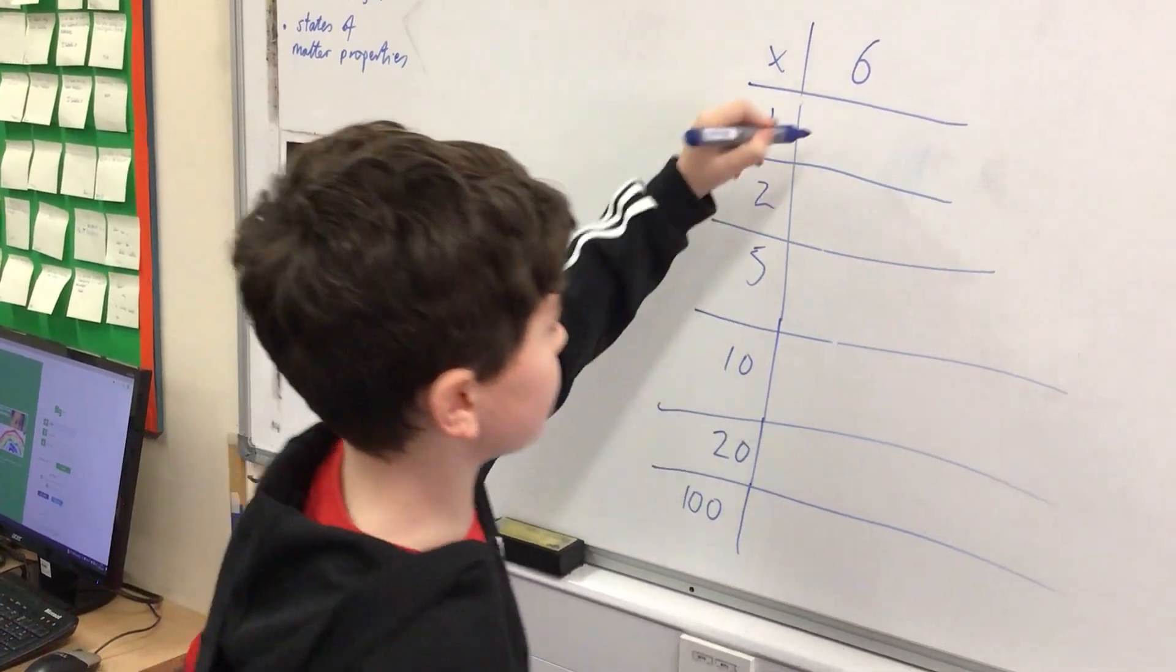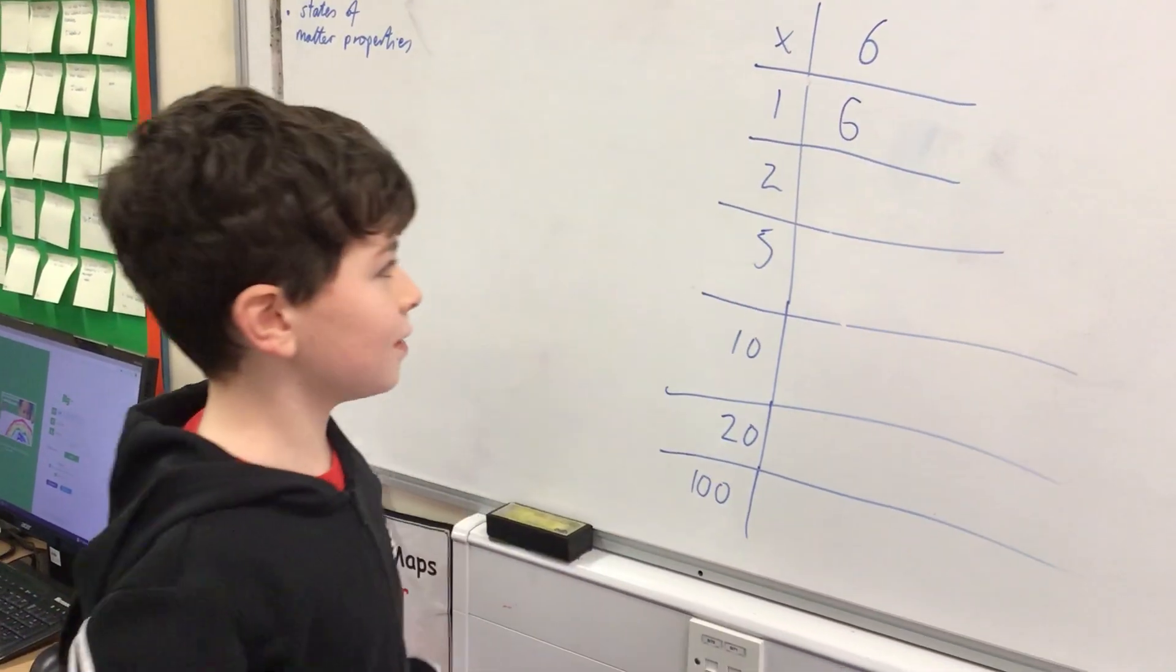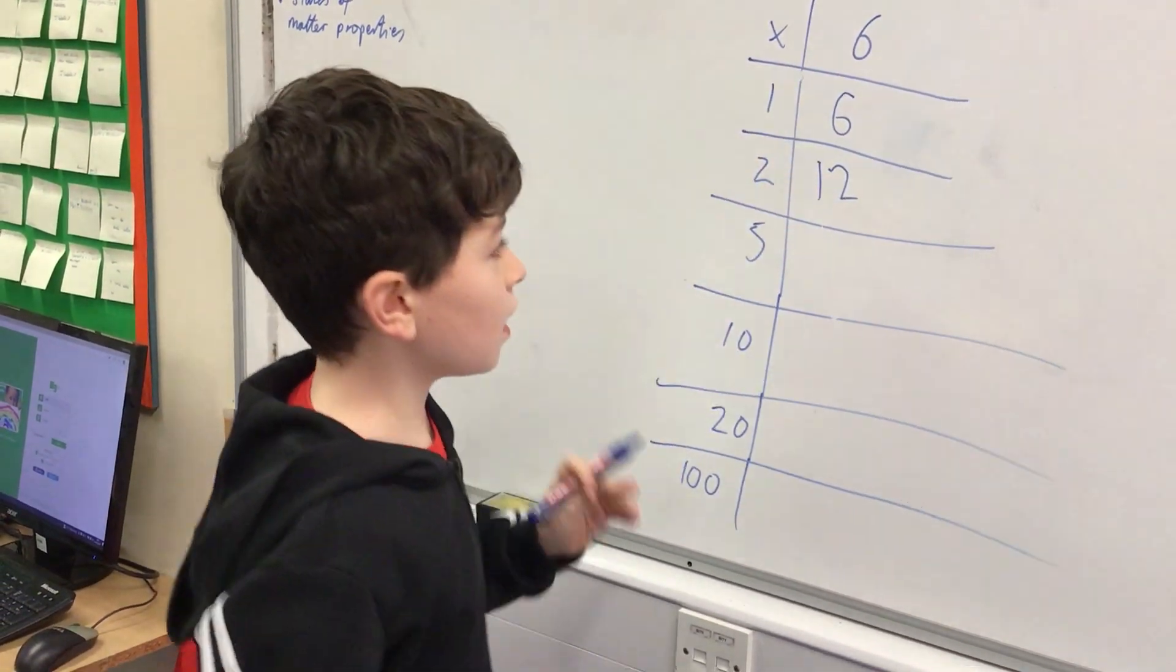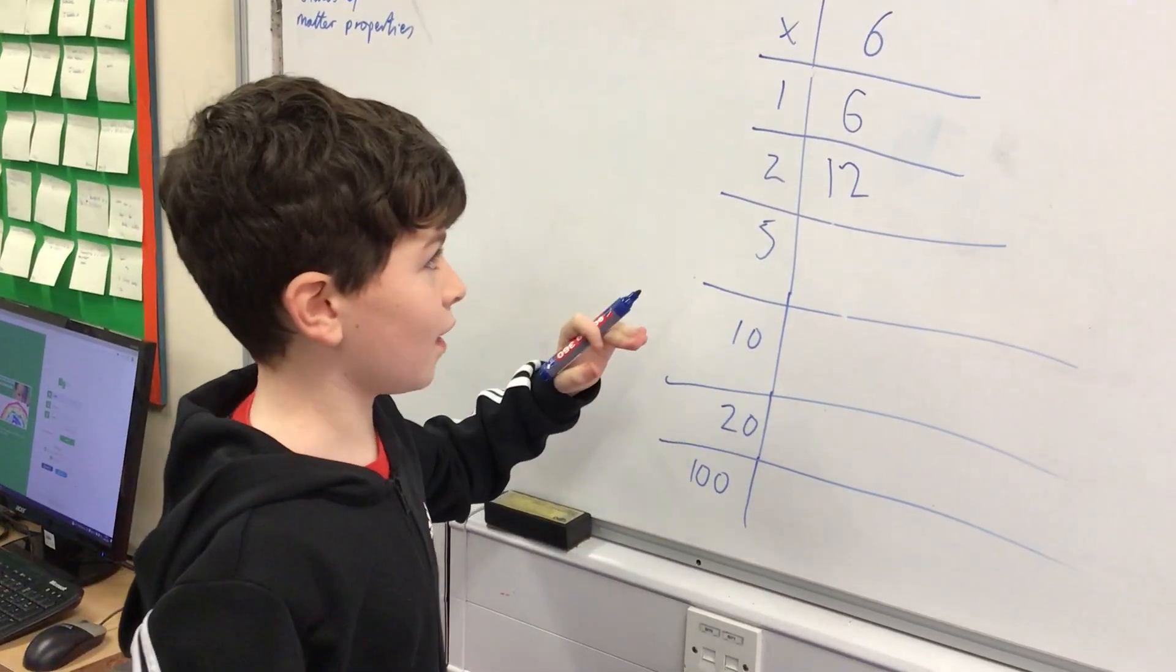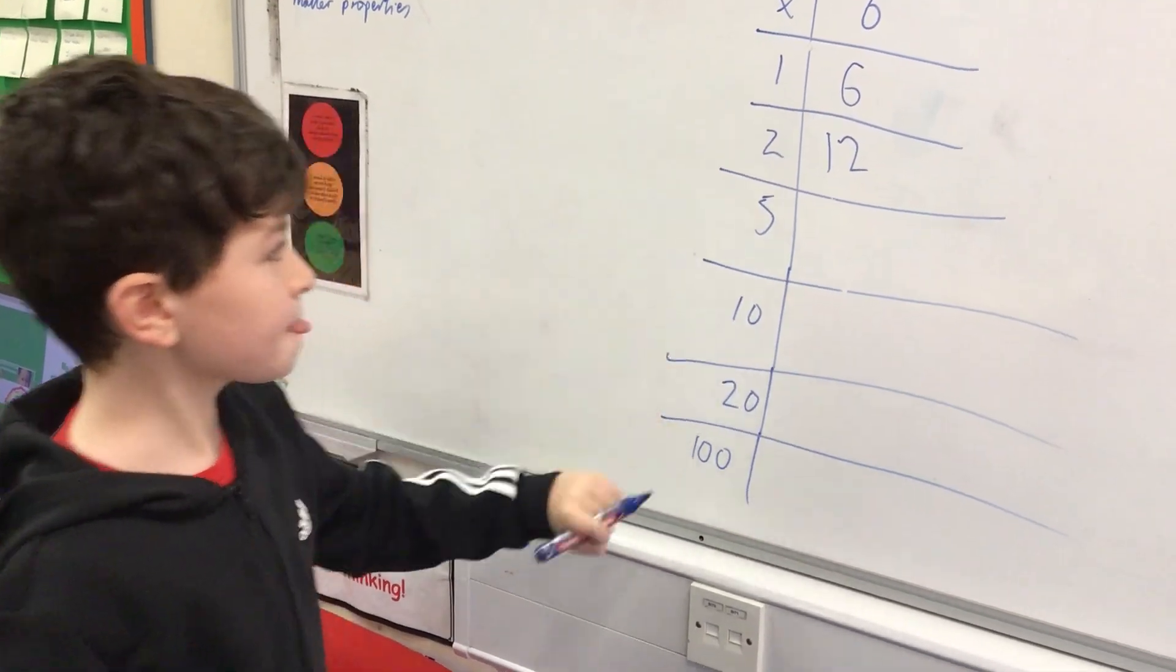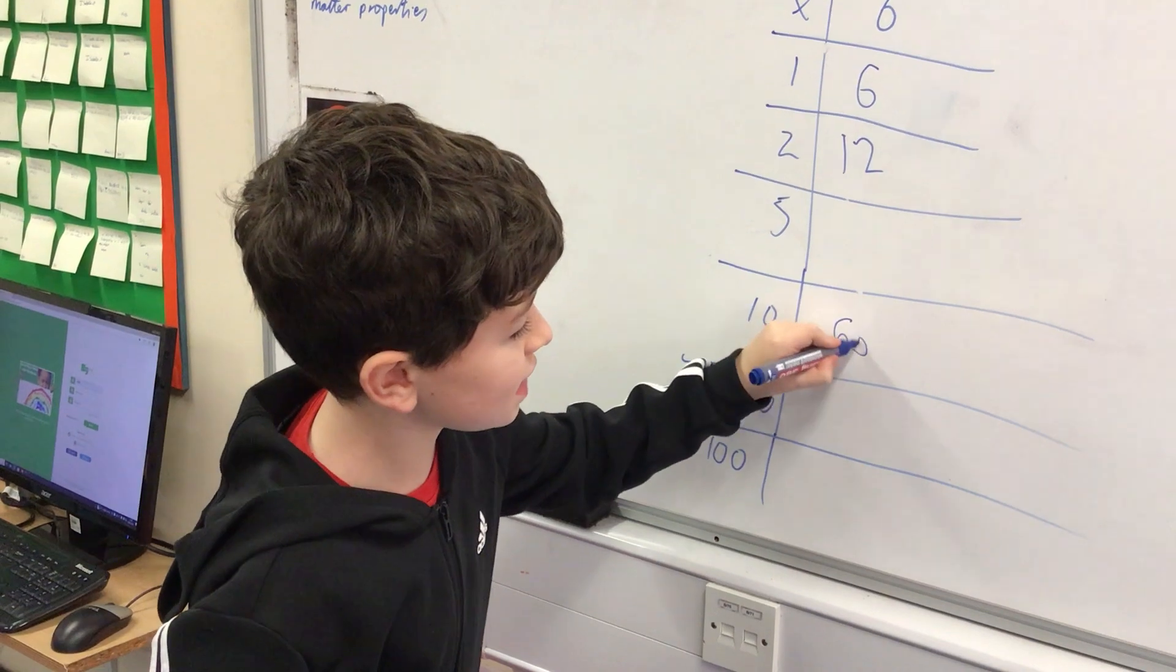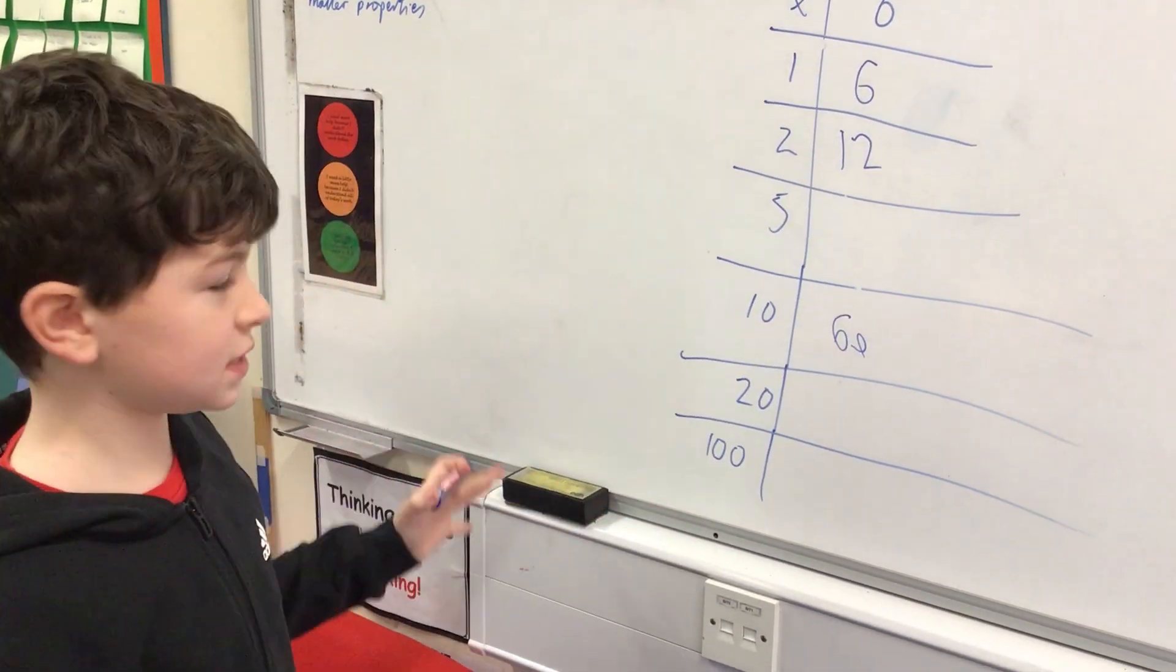So six times one is obviously six, and then we've got six times two which is twelve. Then we skip to ten, so six times ten is obviously sixty. Then we have to half sixty to make the five, so that's thirty.